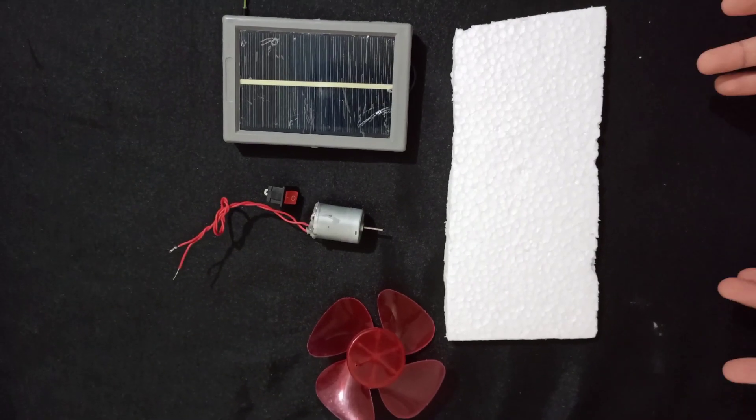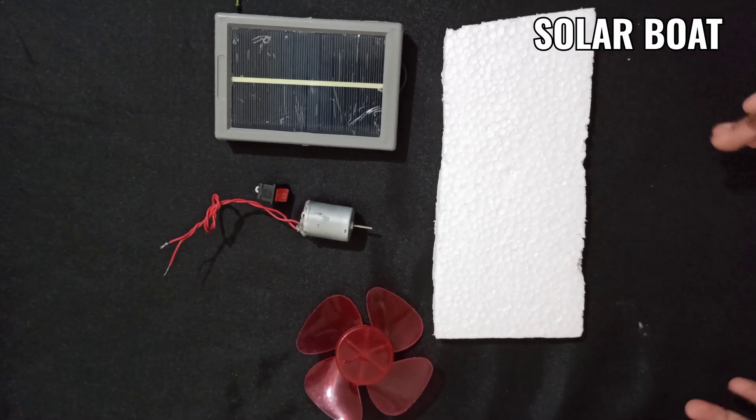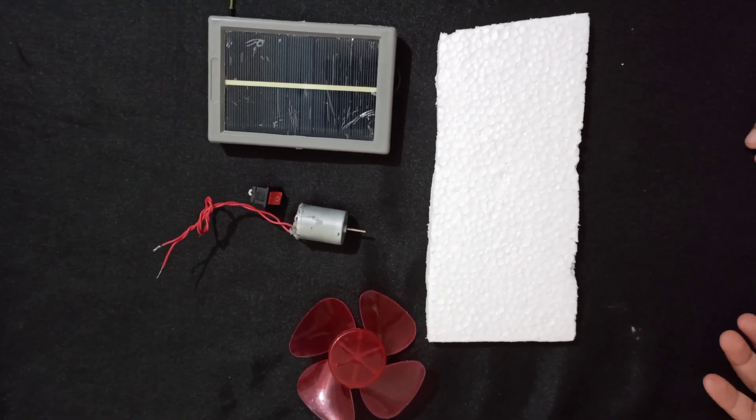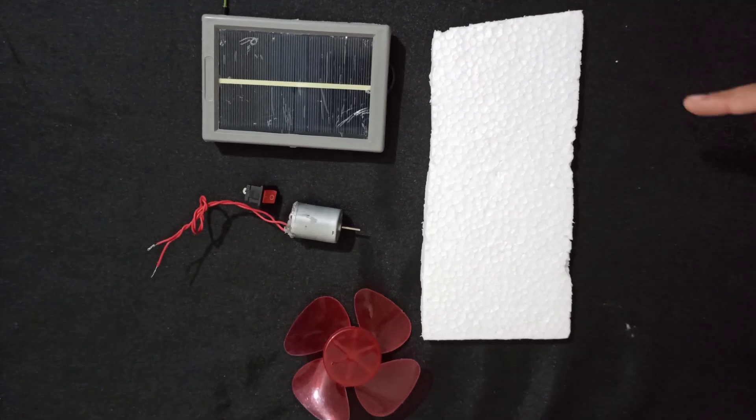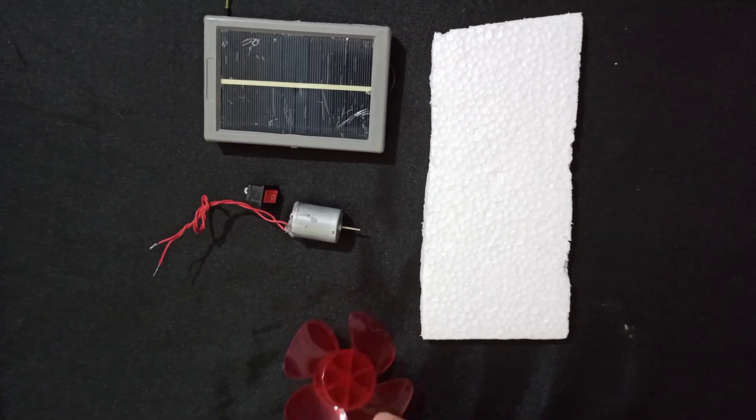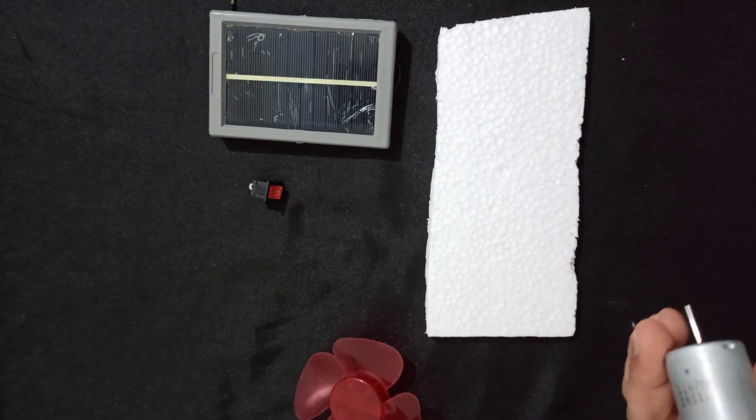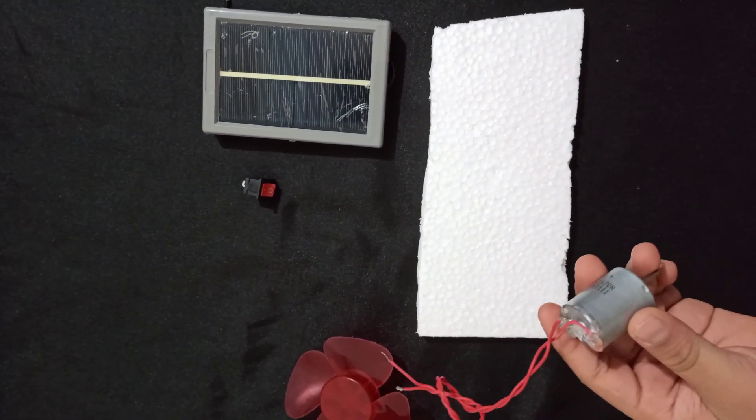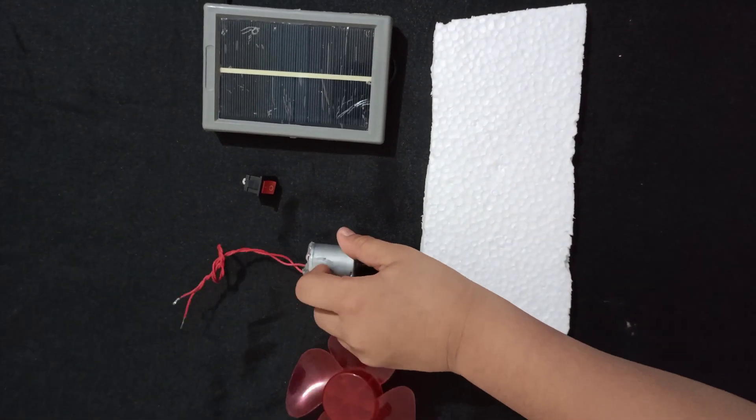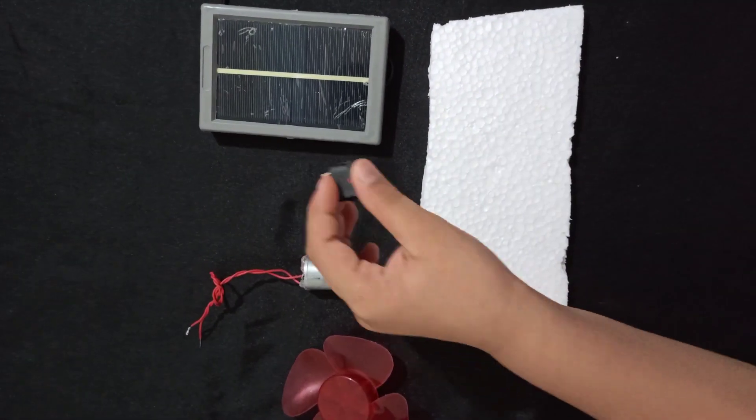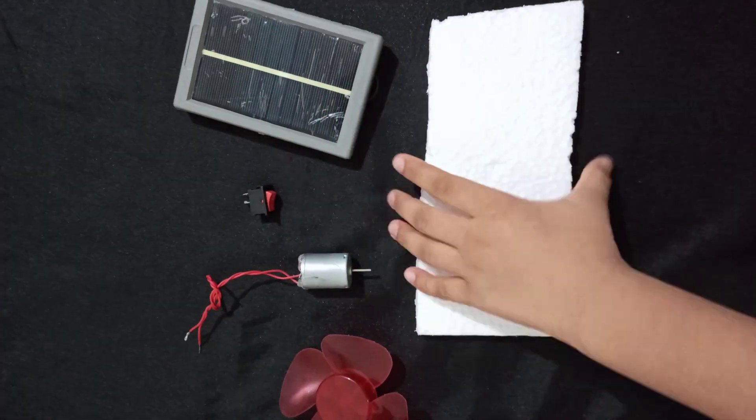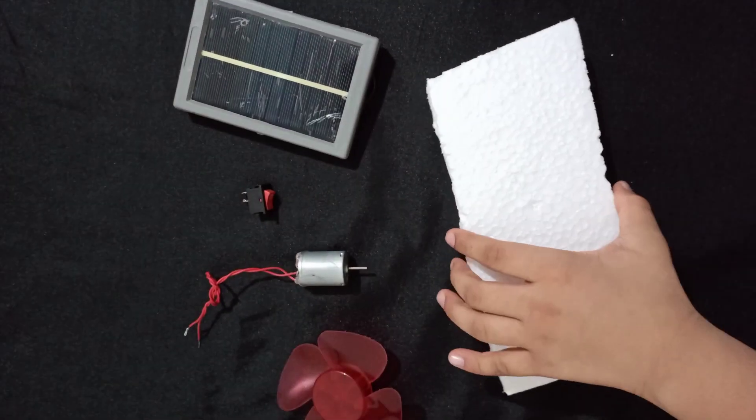My next boat is the solar boat. Doesn't it sound cool? So let's get started. The things you need for this experiment are a propeller, a motor called the solar motor as it only works when it's attached to a solar panel, an on-off switch, a solar panel, and a piece of styrofoam.